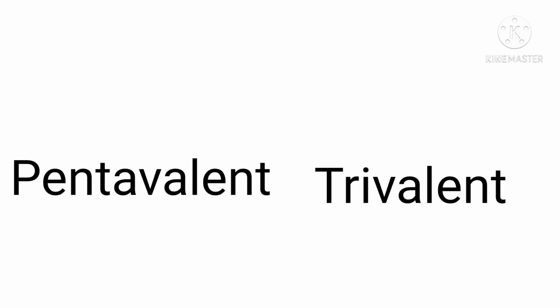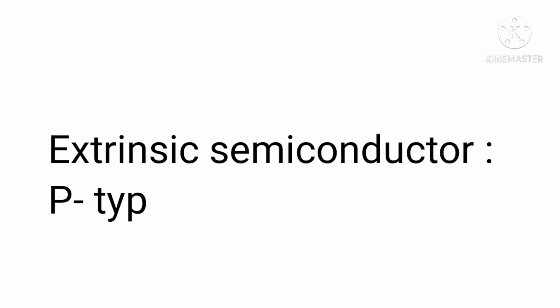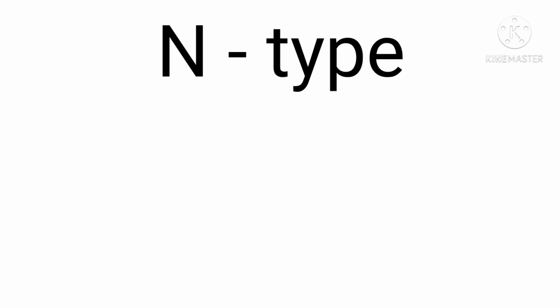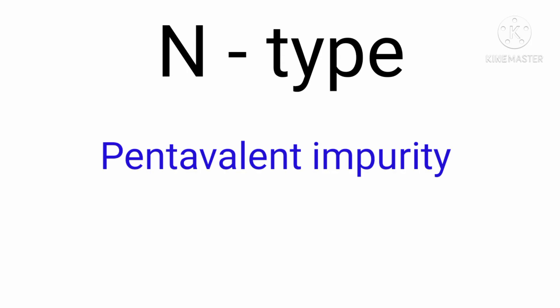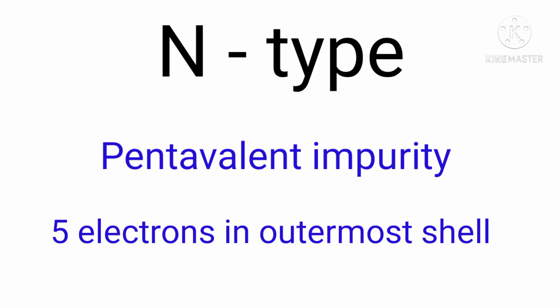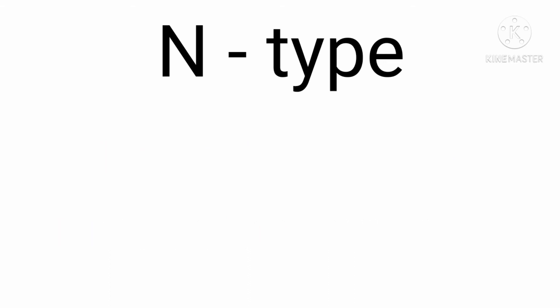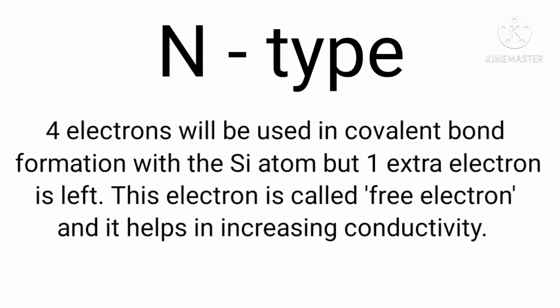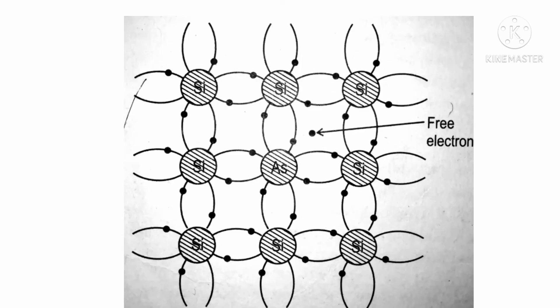Extrinsic semiconductors are classified into two types: p-type and n-type. In an n-type semiconductor, a pentavalent impurity is added to the silicon crystal. The pentavalent atom has five electrons in its valence shell; four are used to form covalent bonds, leaving one extra electron available for conduction. Each pentavalent atom donates one electron, so it is called a donor impurity. The semiconductor has a large number of electrons in the conduction band, and since conductivity is due to negatively charged electrons, it is called n-type. The majority charge carriers are electrons and minority carriers are holes.